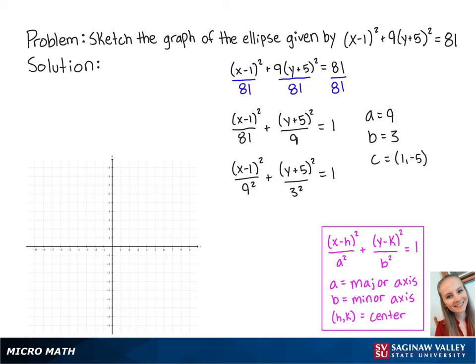Now we will plot the relevant points. The center is at (1, -5), and the major axis points will be 9 to the left and 9 to the right of the center. So the first point is at (-8, -5), and the second point is at (10, -5).